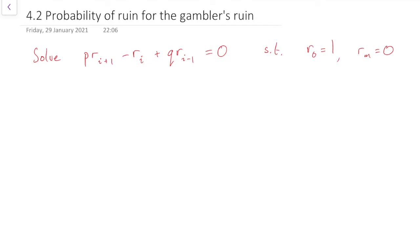So we have the characteristic equation, as always, is how we start. And so here this becomes p lambda squared minus lambda plus q equals zero.